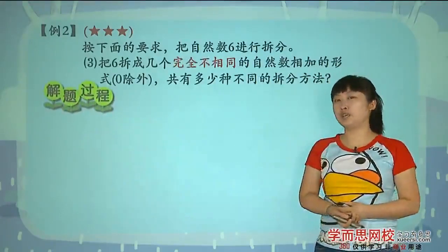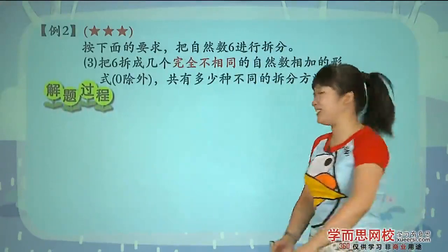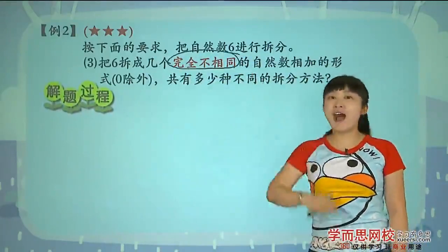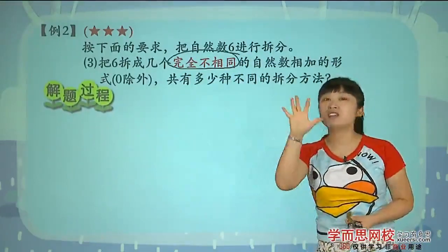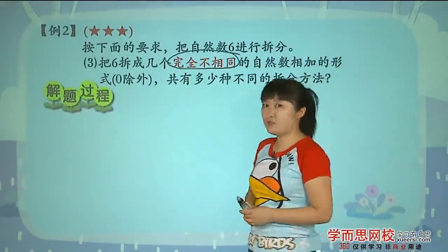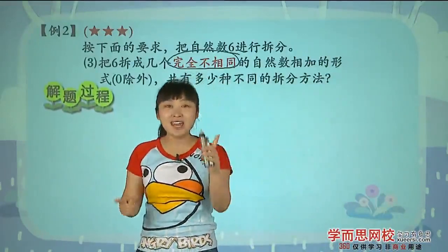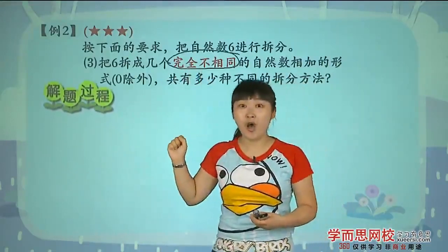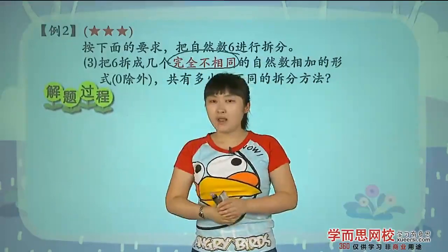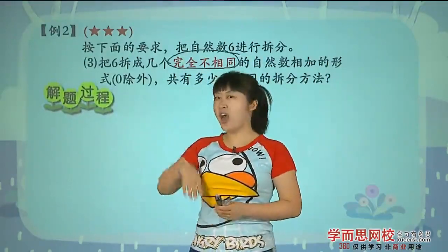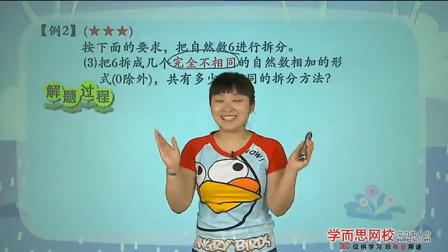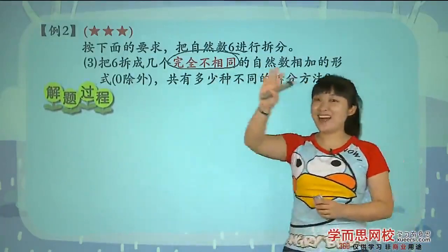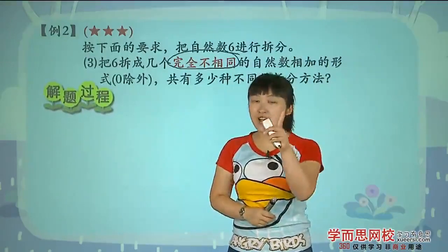再接再厉还有一道小题呢,请看下面的一个。这个我觉得大家再解释起来应该不成问题,赶紧先把这五个字圈起来,把六拆成几个完全不相同。注意了五个字先给它圈起来,什么叫完全不相同。宝贝们试着说一说什么叫做完全不相同,有些同学说了老师这完全不相同就是说谁跟谁长的都不能是一样的,太棒了。